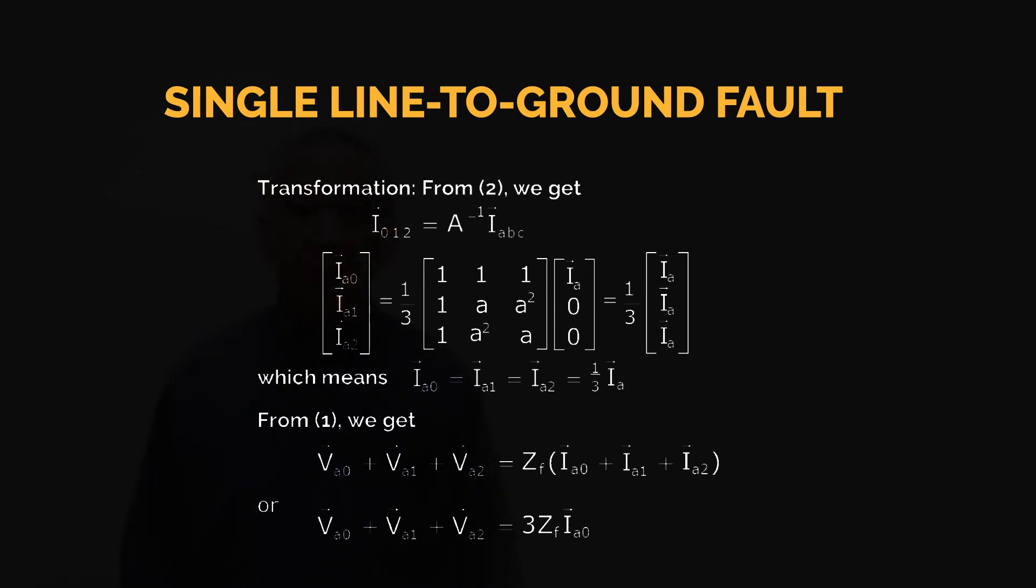From the second equation, wherein IB is equal to zero, we can now get the sequence currents of this faulted point. IA0, IA1, IA2 can now be determined using our equation equal to one-third multiplied by the inverse of the A matrix multiplied by the phase currents IA, IB, and IC. Since IB and IC are both zero, we can substitute zero in that matrix equation. Which means that IA0, IA1, and IA2 are all equal to one-third multiplied by IA.